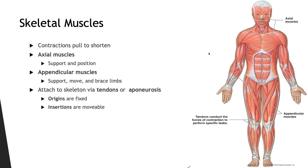When complex movements occur, muscles commonly work in groups rather than individually. Their cooperation improves the efficiency of a particular movement. For example, large muscles of the limb produce flexion or extension over an extended range of motion.